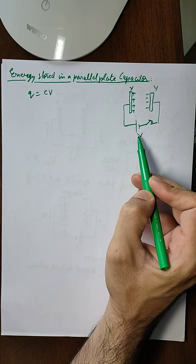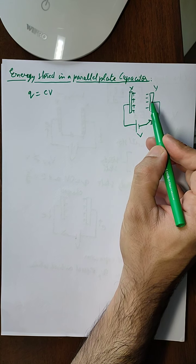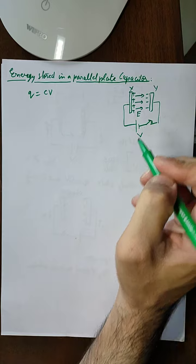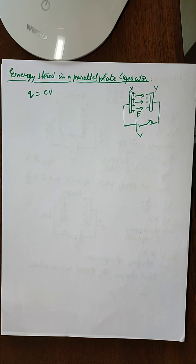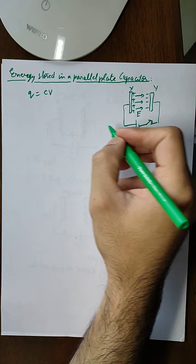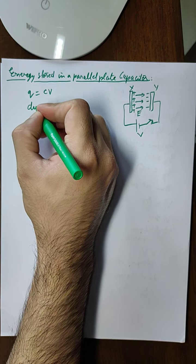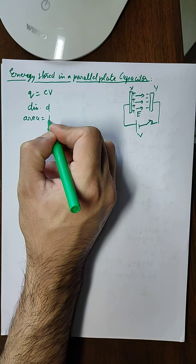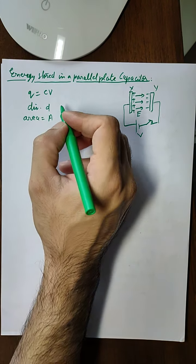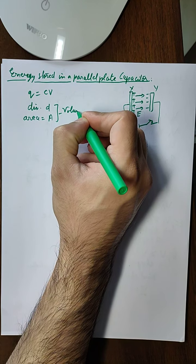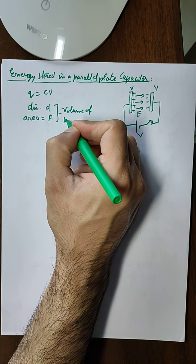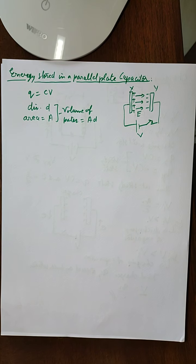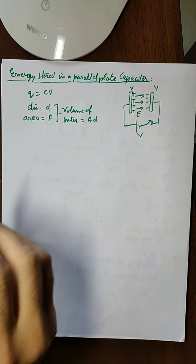Now if there are charges on the plates, there will exist some amount of electric field between the plates. If the distance between the plates is D and the area of the plates is A, then the volume between the plates will be equal to A multiplied by D.